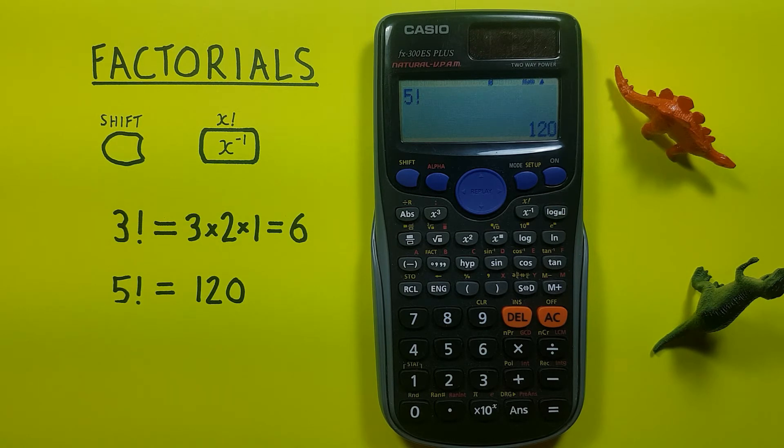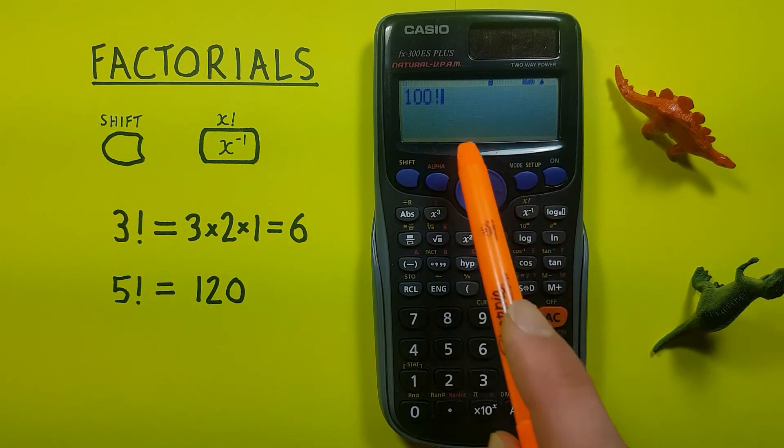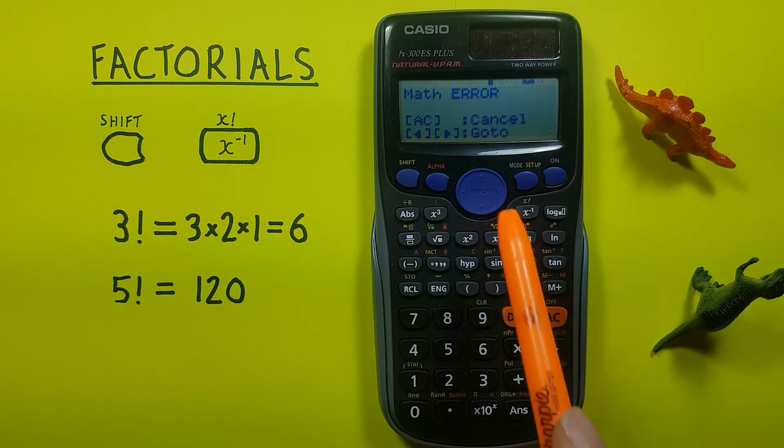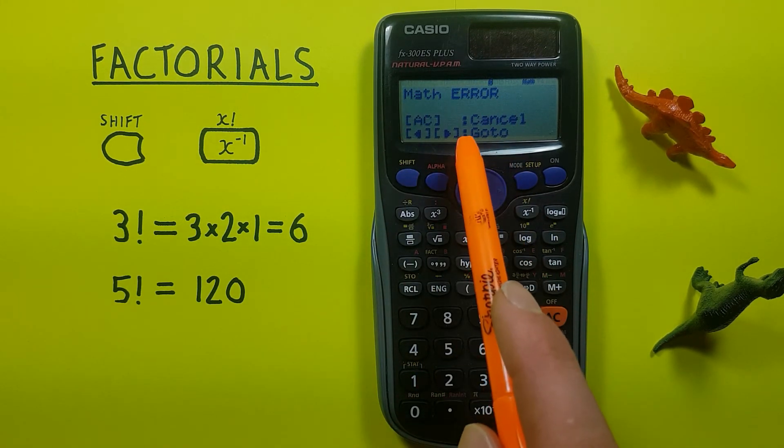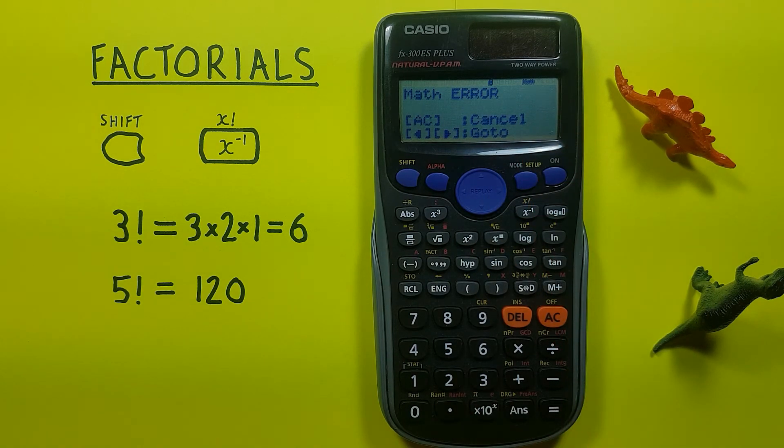Now it's important to know that this calculator can't handle large factorials. So for example, if we try to do the factorial of 100, we'll get this error screen here. That's because the number that would result from that 100 factorial is just too big for this calculator to handle.